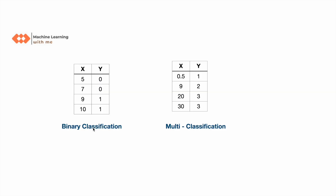For binary classification, our target variable has just two classes — zero and one. In multi-classification we have more than two classes: one, two, three, and we can have many more. Using logistic regression, we'll try to predict whether x belongs to which class of y — whether it's zero or one.